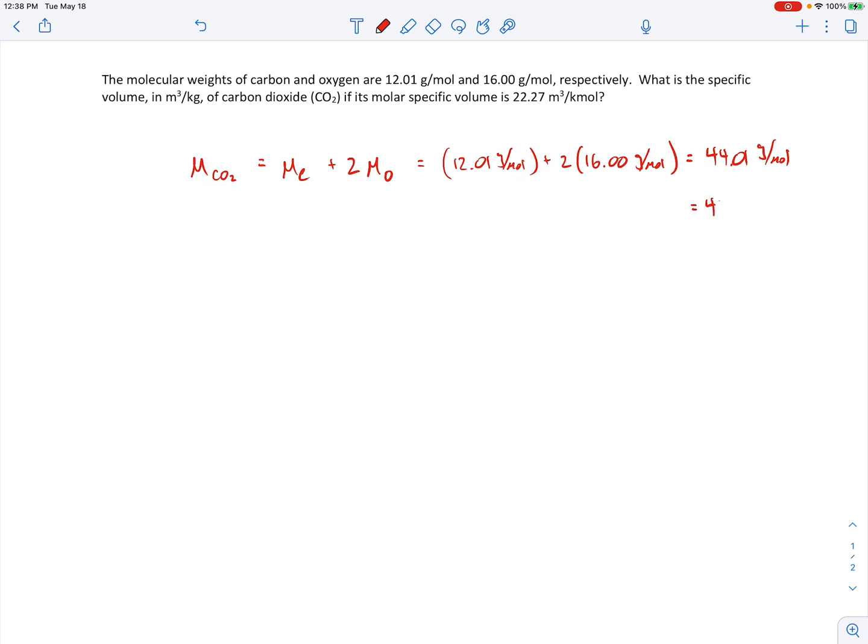Or written another way, that'd be 44.01 kilograms per kilomole. Basically we're just multiplying the numerator and denominator by a thousand to give us kilograms per kilomole.